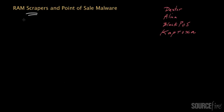RAM scrapers are a category of malware that have been used in a number of fairly prominent recent large-scale data breaches. RAM scrapers have actually been around for quite a while, since about 2009 or so, and they really belong to a broader category of malware known as info-stealers.